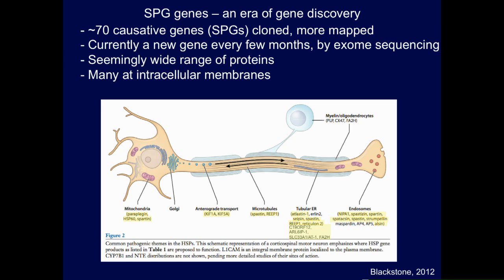At first sight there's seemingly a wide range of proteins. Some of them, as you might expect from the susceptibility of longer axons, affect axon transport components. But a much larger number encode proteins found on intracellular membranes, in two main locations: endosomes and endoplasmic reticulum. I've highlighted in yellow the genes that have homologues in Drosophila, and the list is expanding all the time.